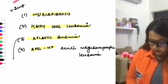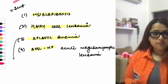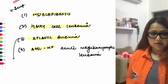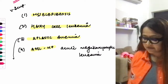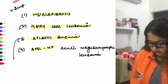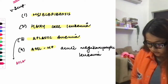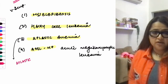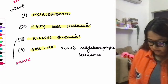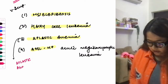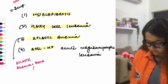Let's discuss aplastic anemia. Aplastic anemia is equivalent to bone marrow failure. The function of bone marrow is hematopoiesis — the formation of blood cells. So in aplastic anemia, the bone marrow is failing.